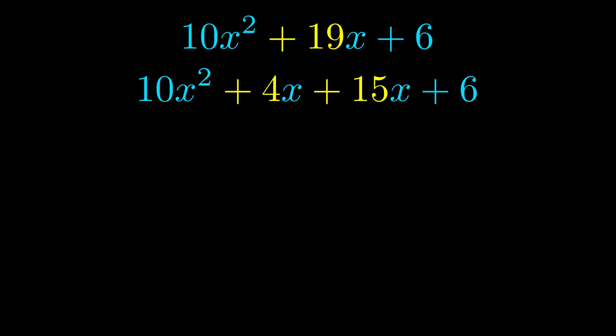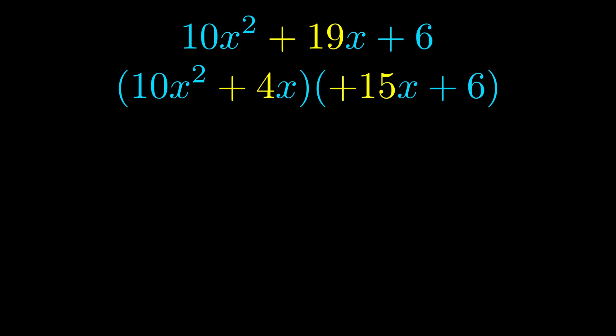Once we've done this we go ahead and we put parentheses around the first term and the last term. And we do that so that we can take the greatest common factor out of both terms. We can see the greatest common factor is now outside in green.